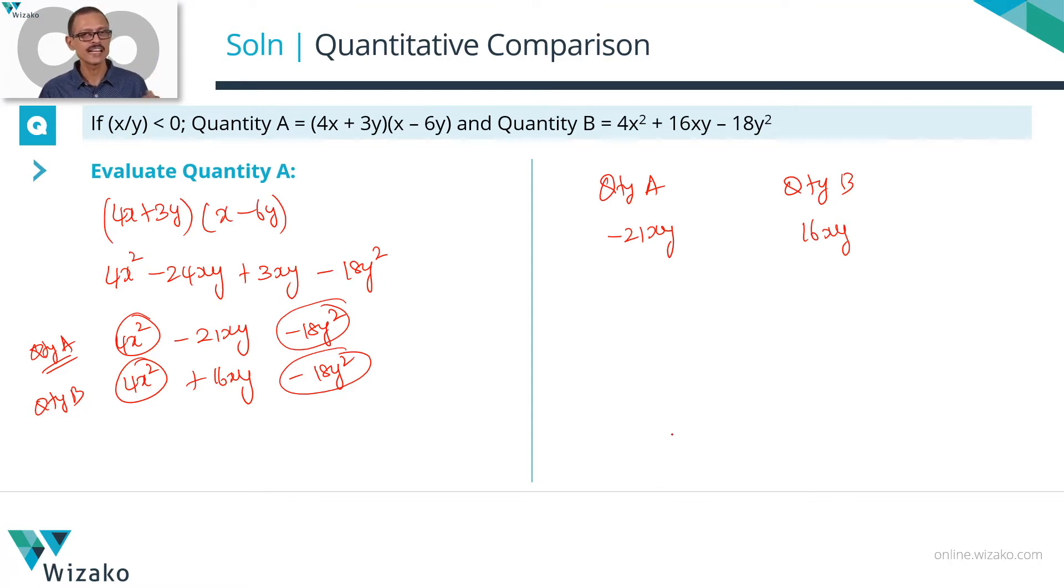If you're not able to compare, the answer is going to be D. One other information that was available at the question stem. Let's not ignore it. We know that x upon y is less than 0.